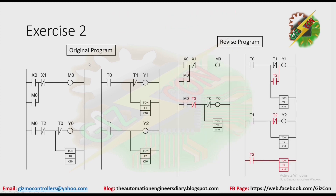Okay, let's continue. This is the original program, and this will be the revised program. The highlighted part here is the edited part of the program. As you can see here, T2 is replaced by T3. And now we have T2 here — we don't have T2 on our original program. Here we also add the normally closed contact of T2, and we add another rung.